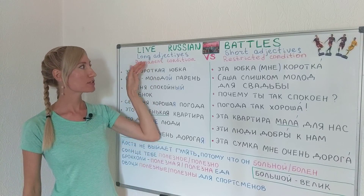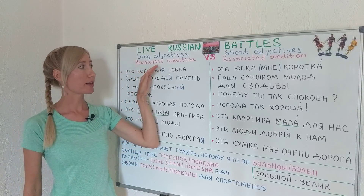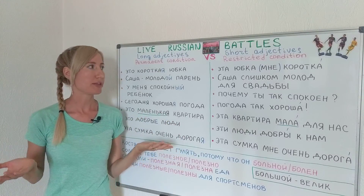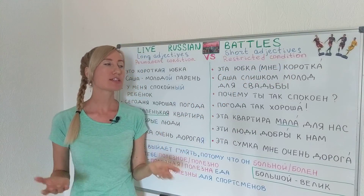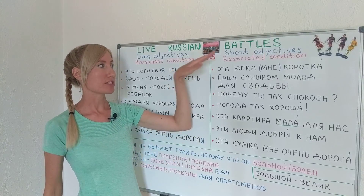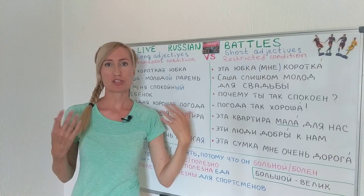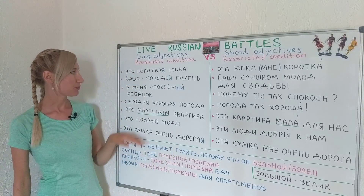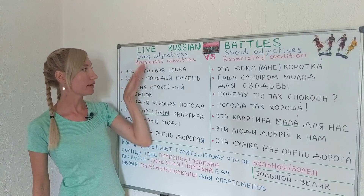Long adjectives express a permanent condition of something. For example, эта короткая юбка — this is a short skirt — most people would agree with this. Compare with эта юбка мне коротка — this skirt is short for me, in my opinion. Short adjectives express a restricted condition, restricted for example by a person. For a certain person this skirt would seem short, but maybe for others it would seem okay.